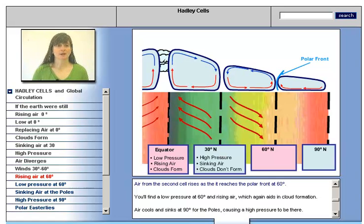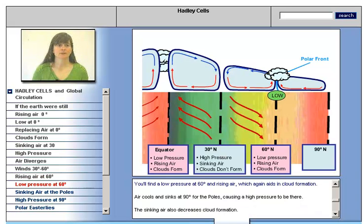Air from the second cell rises as it reaches the polar front at 60 degrees. You'll find low pressure at 60 degrees and rising air, which again aids in cloud formation.